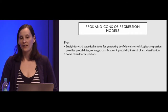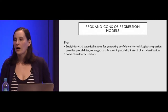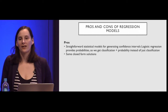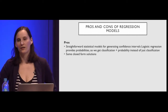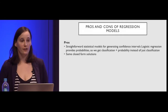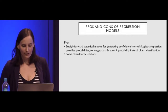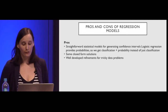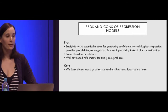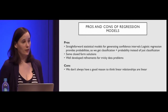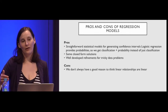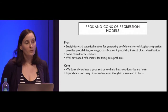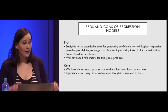There is also well-defined and developed refinements for tricky data problems. On the cons side: we don't always have a good reason to think relationships are linear. The assumptions aren't always true — input data is not always independent. This is especially true when building machine learning models for users, where you'll have many data points about one user that are not independent. These models are also very sensitive to outliers and only look at the means of a dependent variable without looking at the distribution — you're getting a very simplistic version of the world.